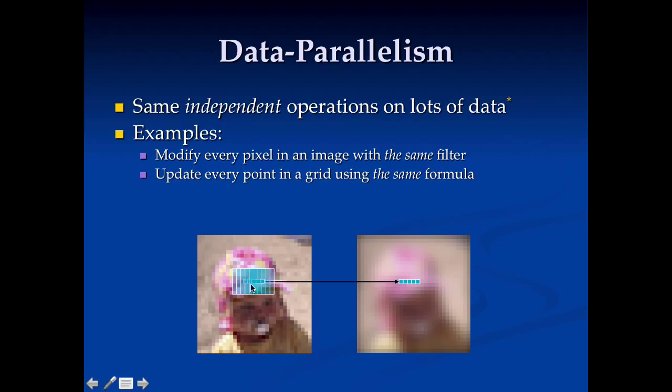Now the operation that I do here is exactly the same for anywhere that I do it in the image. So all of these computations here are exactly the same type of computation. They're just using different data. In fact, that's true for every element in this whole thing here. This is called data parallel execution. It's the same sort of operation. It's just that the data changes.